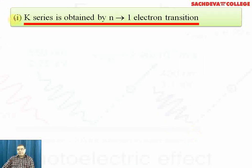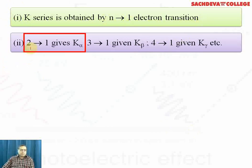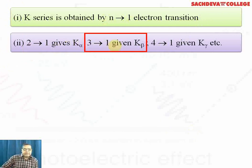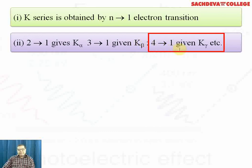K series is obtained by n→1 electron transition. 2→1 gives K alpha, 3→1 transition gives K beta, and 4→1 transition, when electron jumps from fourth level to first level, gives K gamma series or K gamma X-rays.